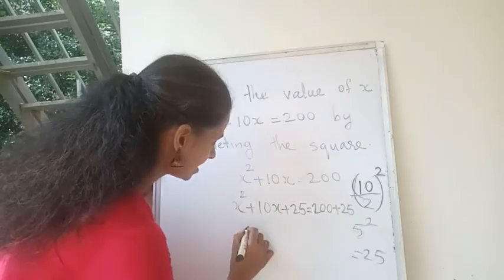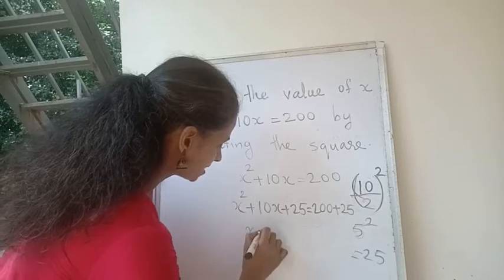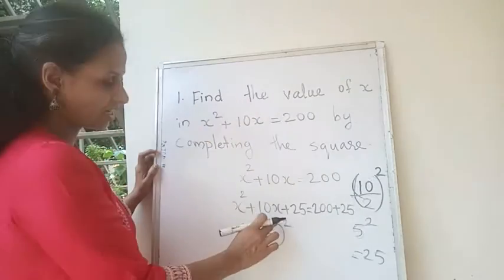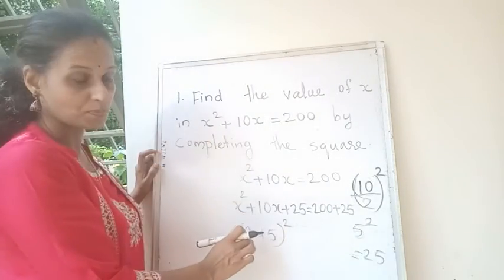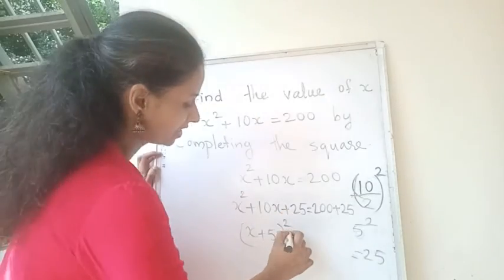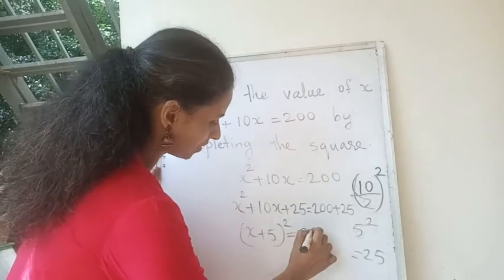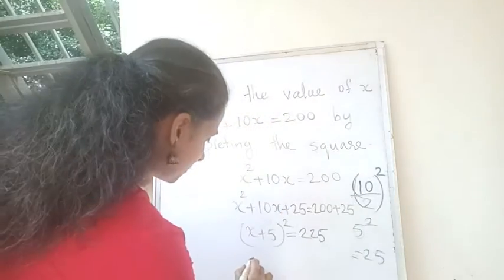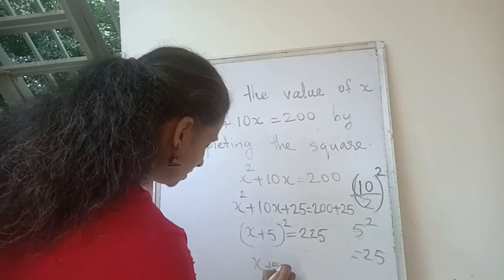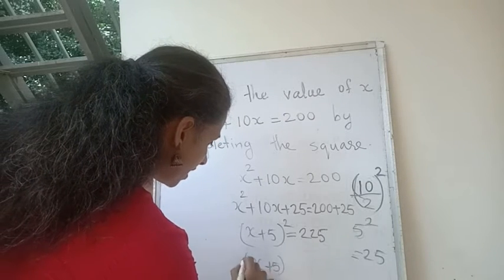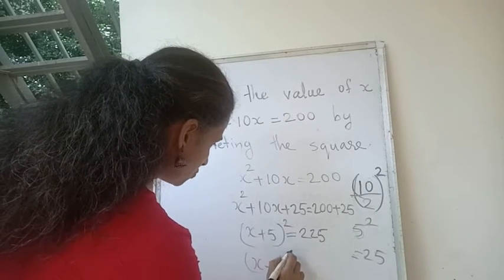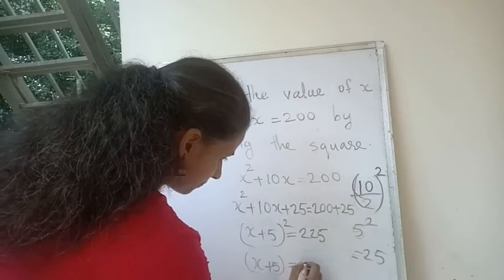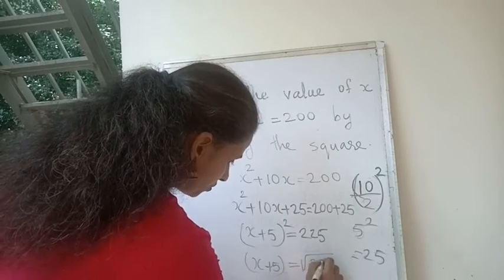We can write it as x plus 5 whole square. This is the (x + 5) whole square of this, then equal to 225. So x plus 5 squared is 225, and we have to take x plus 5 equal to root 225.